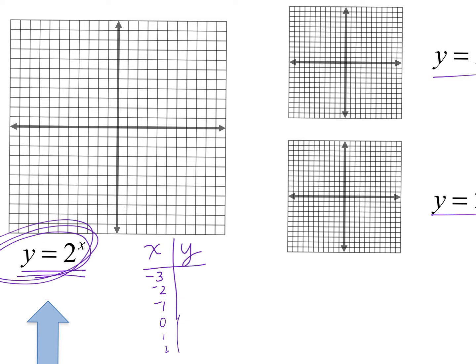So if I put negative 3 into that equation, I get 1/8. If I put -2 in, I get 1/4. If I put negative 1 in, I get 1/2, 2 to the 0 is 1, 2 to the 1st is 2, 2 to the 2nd is 4.